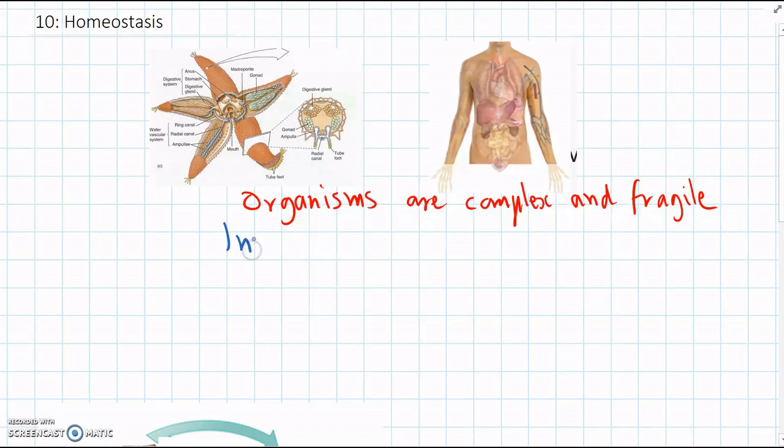And everything inside an organism, we call the internal environment. And this internal environment needs to be stable, like I mentioned, for all the organs to work properly.